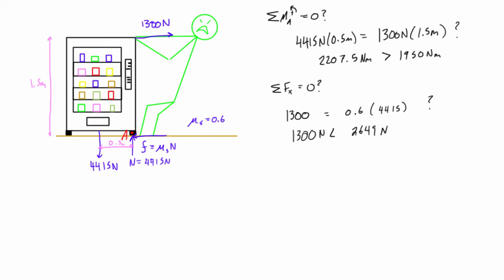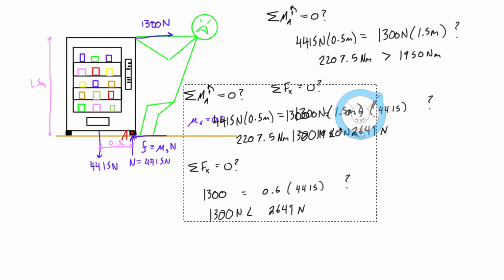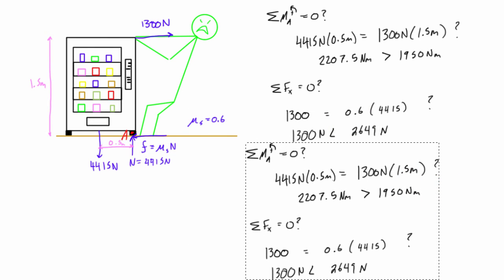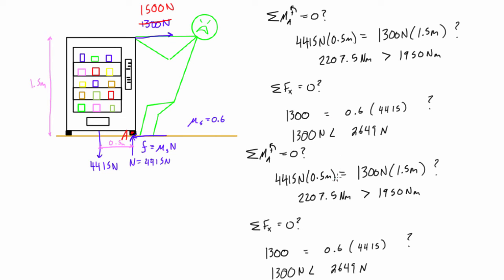Let's try a different scenario: what if he was pulling at 1500 newtons instead of 1300 newtons? For tipping, the left-hand side stays the same at 2207.5 N·m, but 1500 × 1.5 = 2250 N·m. So in this case the applied moment exceeds the resistive moment — he would actually overcome the weight's resistive moment, and the vending machine would tip over and probably land on the guy.